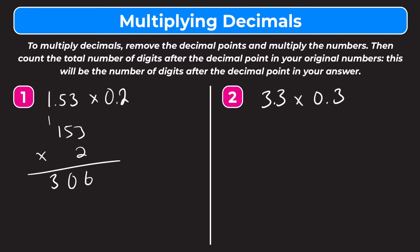But now we have to add the decimal points back in. In order to figure out where to put it, we count the number of digits to the right of the decimal point in our original two numbers. In 1 and 53 hundredths we have 2, and in 2 tenths we have 1, making the total three digits to the right of the decimal point. So in our answer we have to have three digits to the right of the decimal point, and our final answer is 306 thousandths.